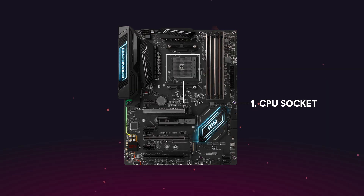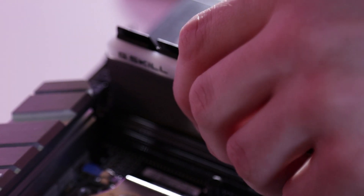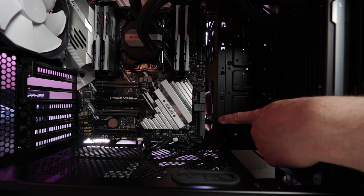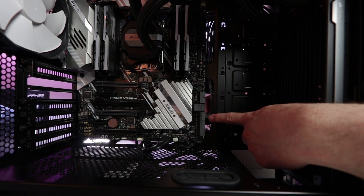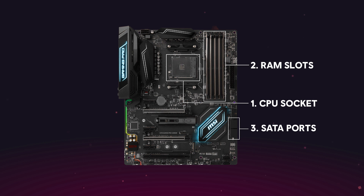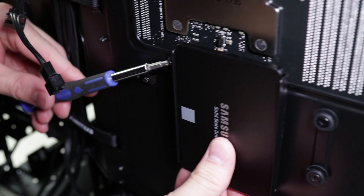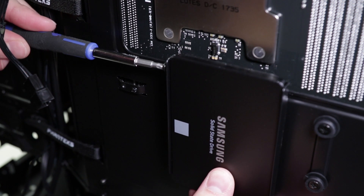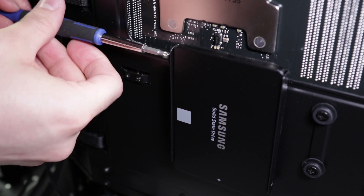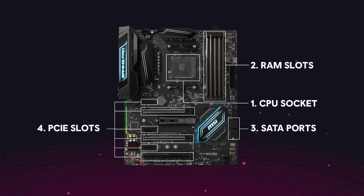Next we have the RAM slots. RAM slots look generally the same on every motherboard, and yes, you guessed it — they're made to house your RAM. SATA ports is where you plug in storage devices, such as SSDs or mechanical drives, and the amount of SATA ports differs depending on the motherboard that you have. There are also different types of SATA ports, and the main difference is the maximum throughput of data. If you're using an SSD, make sure that your motherboard supports SATA 3, to make sure that you're taking advantage of that super quick speed from the SSD itself.